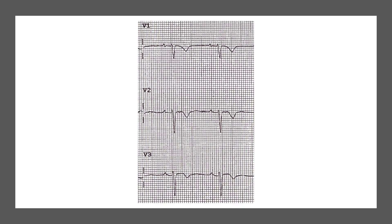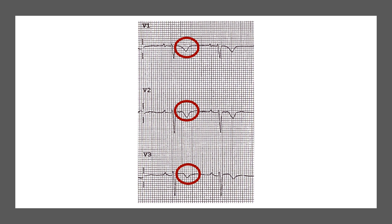Looking at V1 to V3, the first abnormality you'll notice is T-wave inversion. From previous discussions, we said there are two different shapes of T-wave inversions: asymmetrical and symmetrical. Asymmetrical T-wave inversions are abnormal but can be associated with relatively benign conditions like strain pattern or left ventricular hypertrophy. The symmetrical ones are the concerning ones — those are associated with PE, ACS, and serious conditions. Looking at our ECG, the T-wave inversion here is symmetrical.